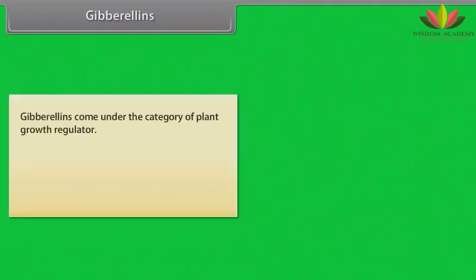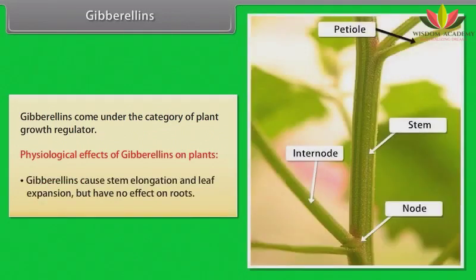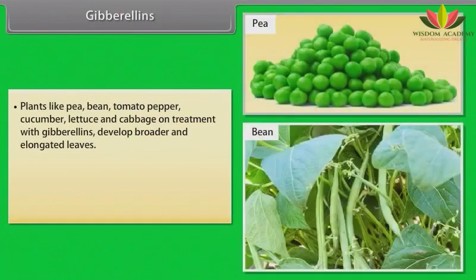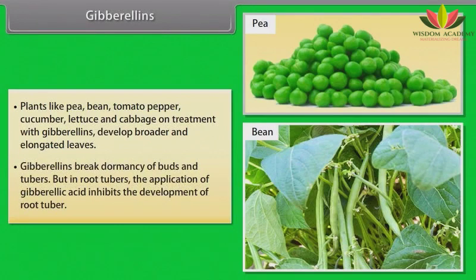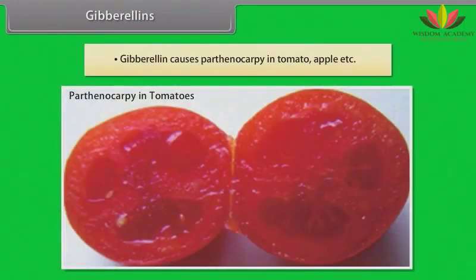Gibberellins come under the category of plant growth regulators. Physiological effects of gibberellins: they cause stem elongation and leaf expansion but have no effect on roots. They promote seed germination in lettuce, cereals, etc. Plants like pea, bean, tomato, pepper, cucumber, lettuce and cabbage on treatment with gibberellins develop broader and elongated leaves. Gibberellins break dormancy of buds and tubers, but in root tubers, the application of gibberellic acid inhibits the development of root tubers. Gibberellins cause parthenocarpy in tomato, apple, etc.